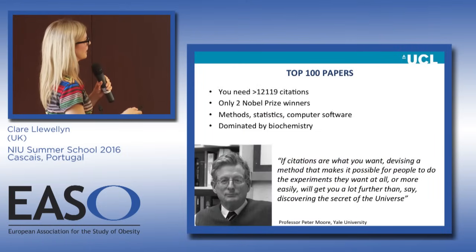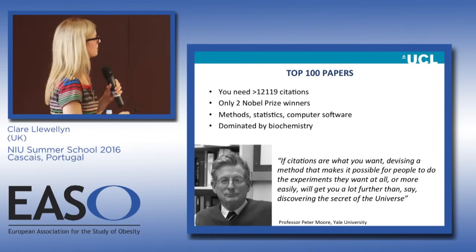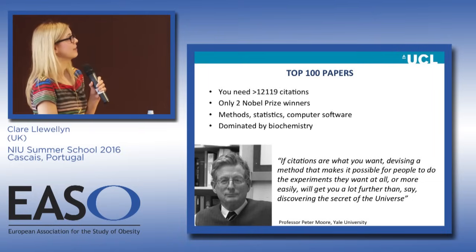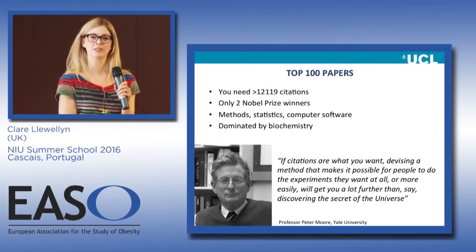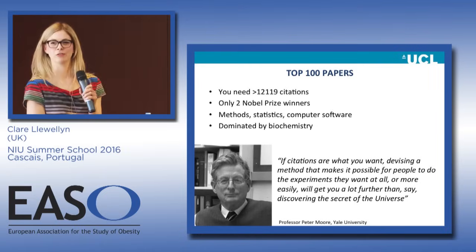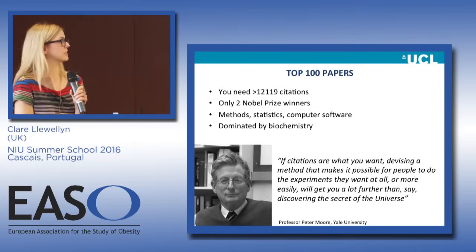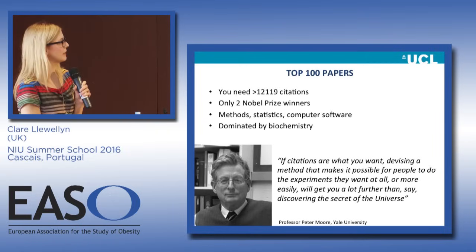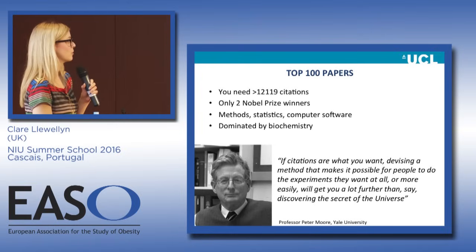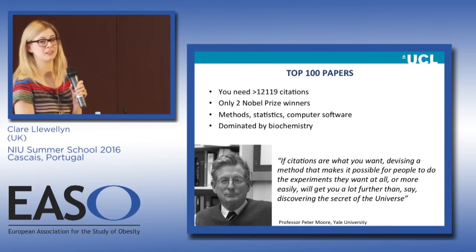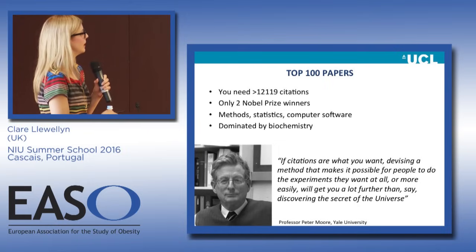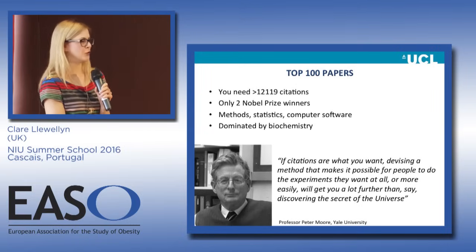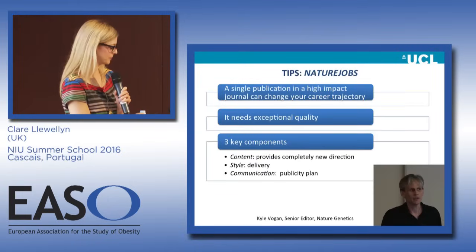Looking through the top 100 papers, biological lab techniques are dominating the most highly cited papers. To be in the top 100, you need more than 12,000 citations. Very interestingly, only two Nobel Prize winners were in there — the discovery of the structure of DNA wasn't there. What became very clear was these papers were dominated by methods, statistics, and computer software. As Professor Peter Moore pointed out: 'If citations are what you want, devising a method that makes it possible for people to do the experiments they want to do will get you a lot further than, say, discovering the secret of the universe.'